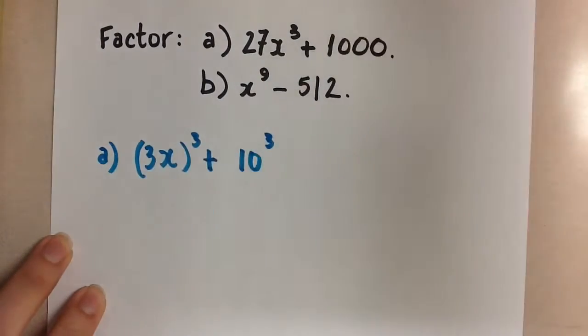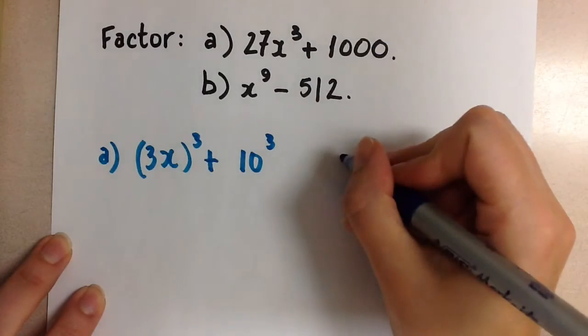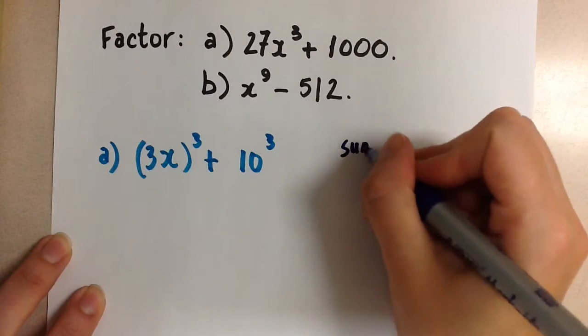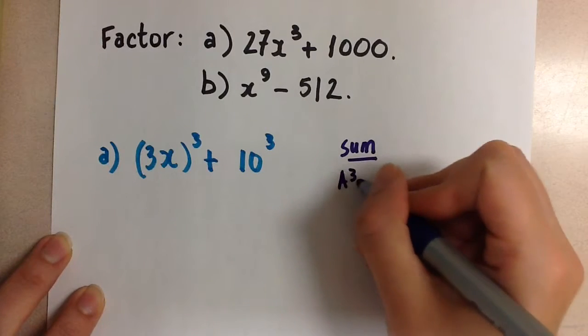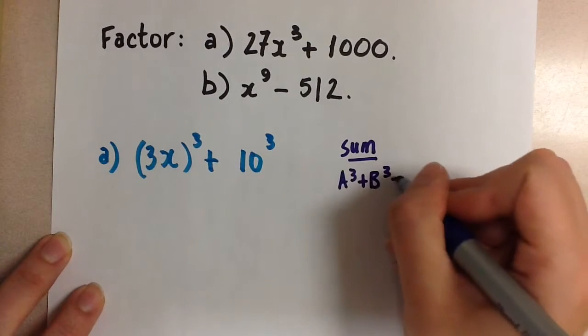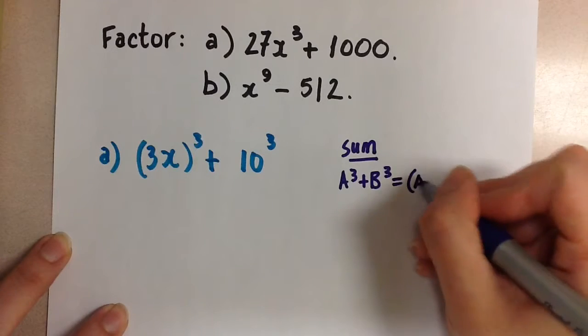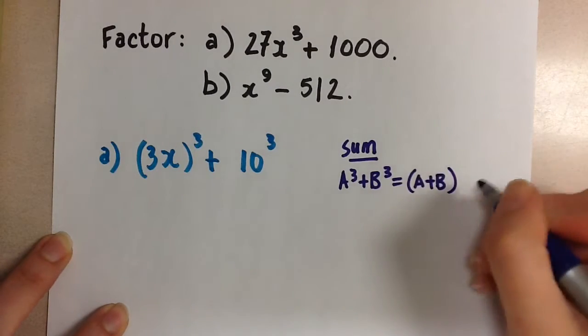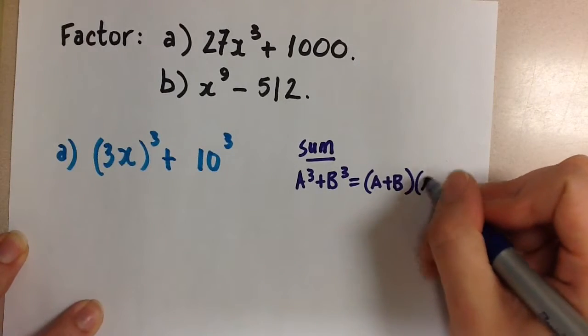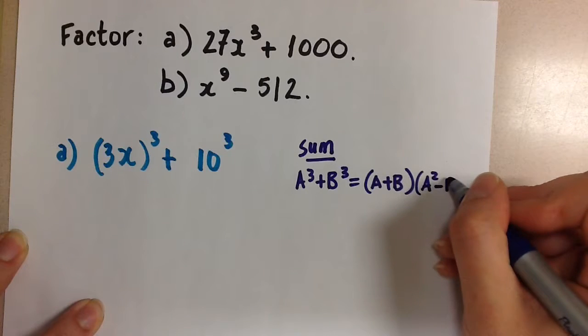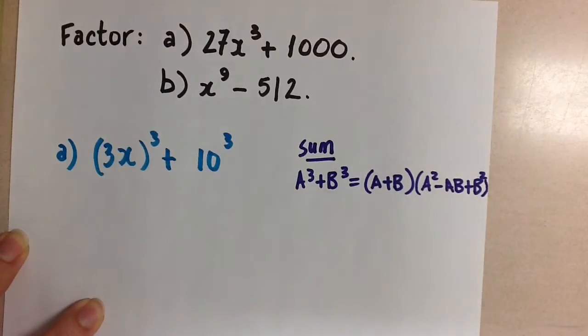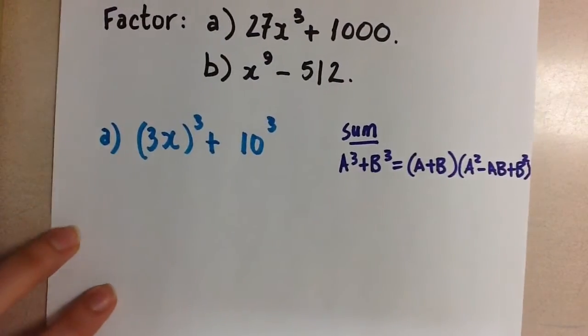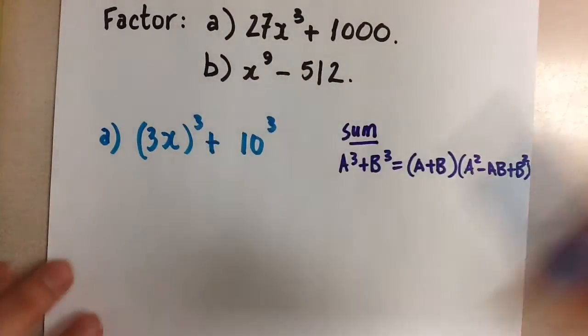So the formula for sum of squares, sorry, sum of cubes, says that if we have a cubed plus b cubed, this factors to a plus b times a squared minus ab plus b squared.